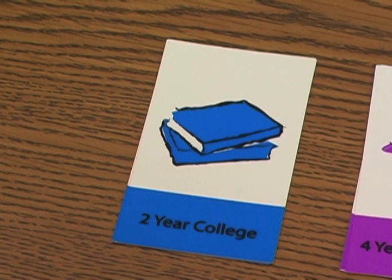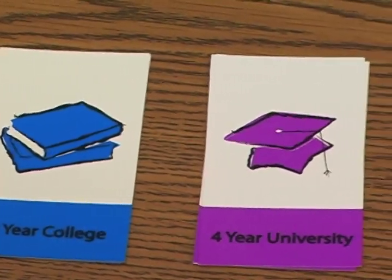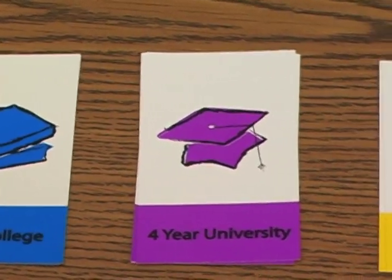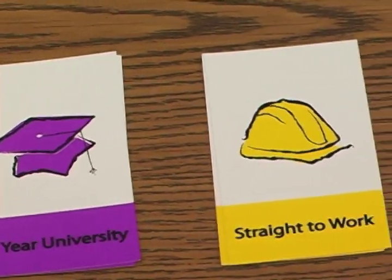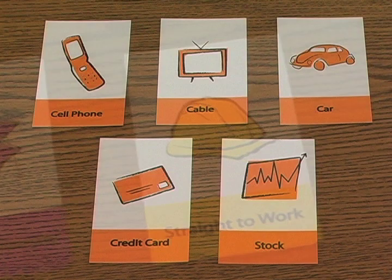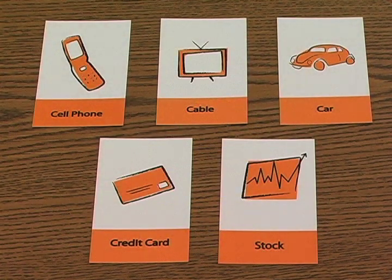First, players will begin their journey by choosing to attend a two-year college, four-year university, or go straight to work. Next, players determine which of the following bills or investments they want throughout the game. Each player must choose at least one card.